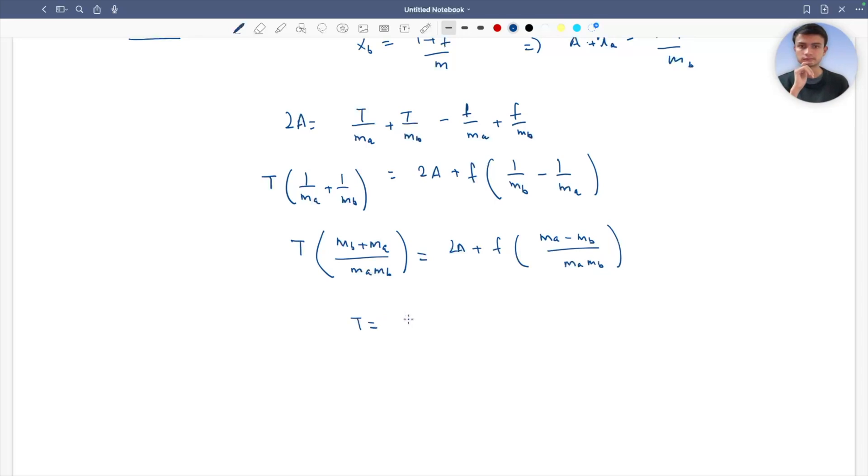So the tension goes as 2A ma mb divided by mb plus ma plus f times ma minus mb divided by mb plus ma. This is the expression for tension in this problem. Thank you, see you in the next video.